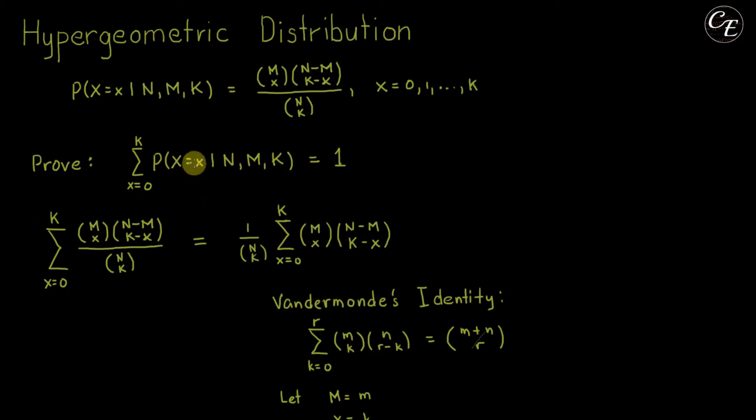Now let's start with our proof. Summation of the probability mass function, in this case we're going to use this one. We'll put it in here. Then this is x equals 0 to k. So we'll have here x equals 0 to k.